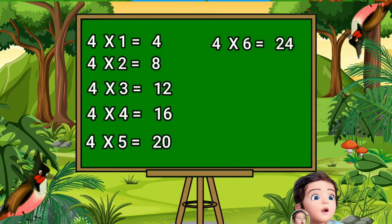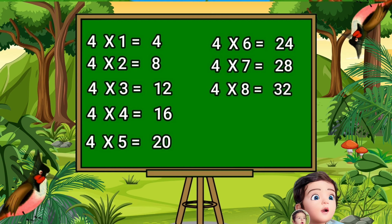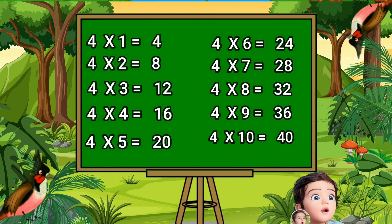Four sixes are twenty-four. Four sevens are twenty-eight. Four eights are thirty-two. Four eights are thirty-two. Four nines are thirty-six. Four nines are thirty-six. Four tens are forty. Four tens are forty.